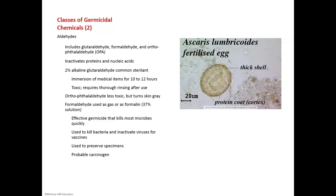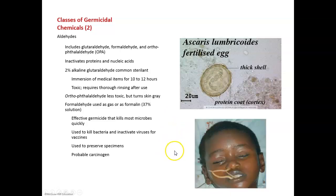A form of formaldehyde is called formalin. Formalin is what we use to preserve specimens in labs. If you take a general biology class or an anatomy and physiology class, you'll eventually get to dissect different worms, frogs, pigs, or cats, and they're stored and preserved in a formalin solution. This is very effective at destroying microbes and preserving materials, but it doesn't preserve everything — and that's where this picture comes in.